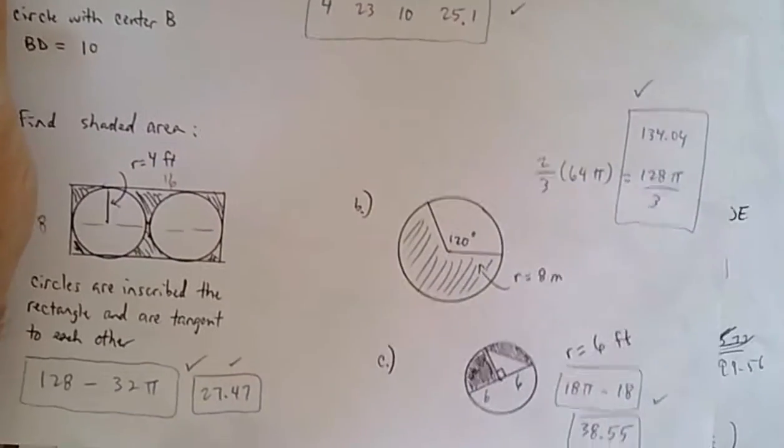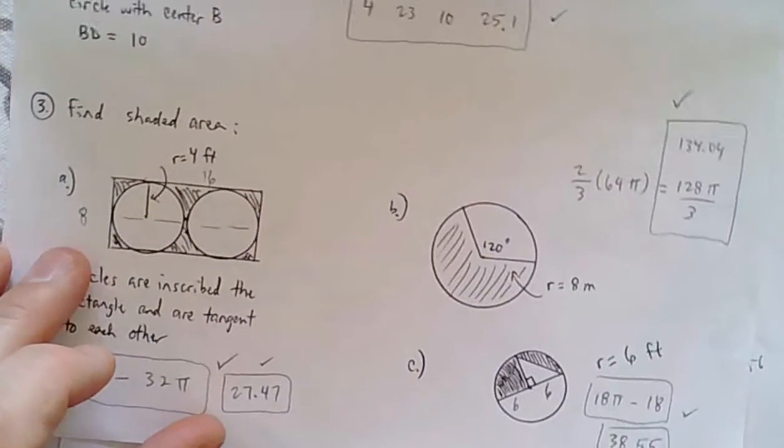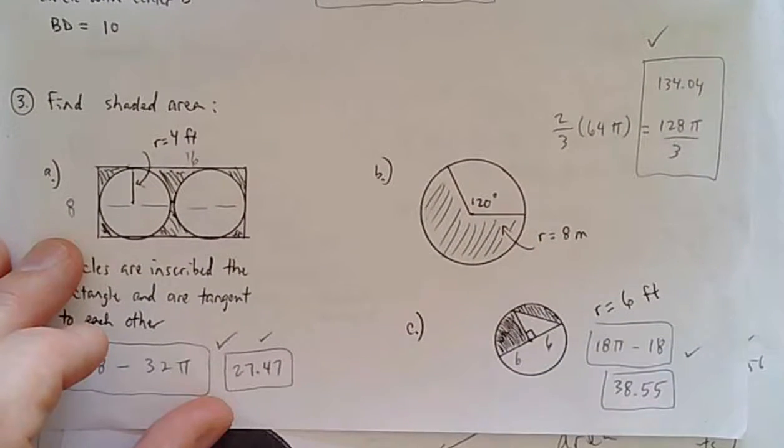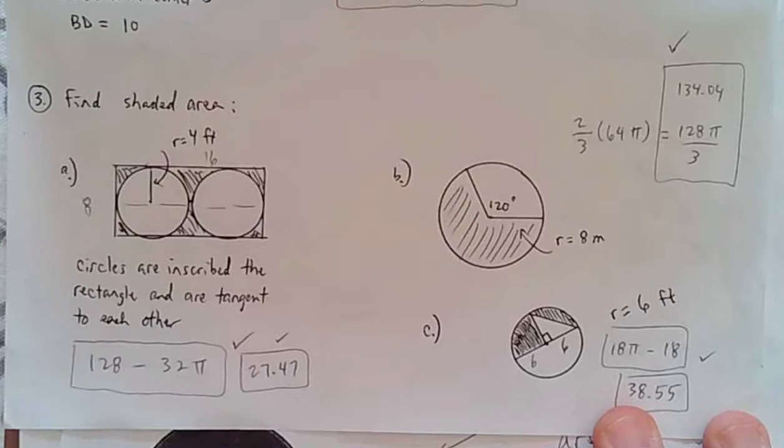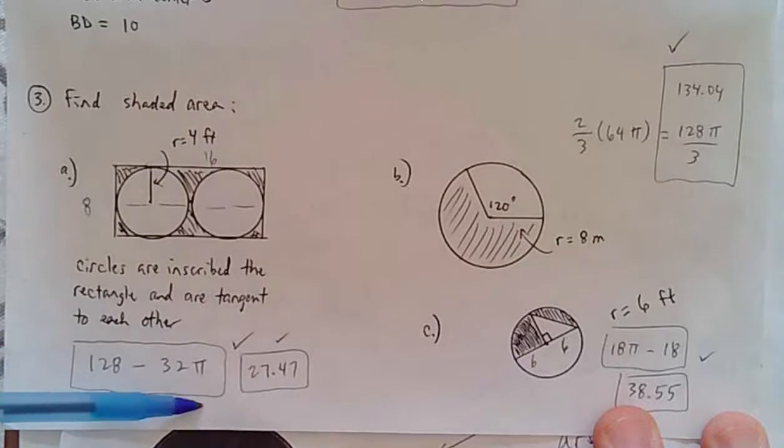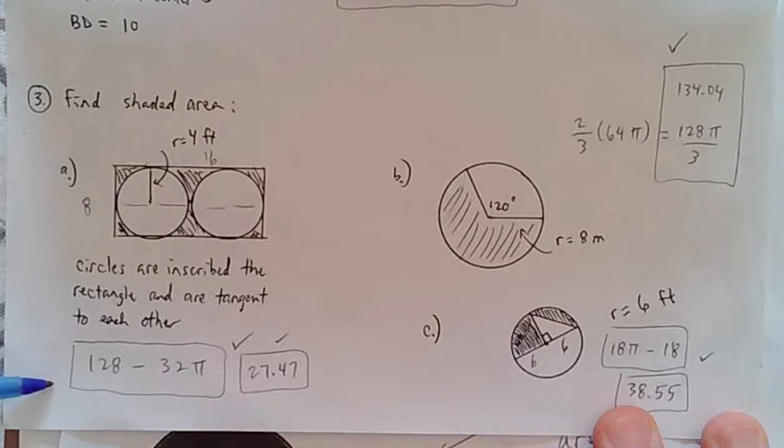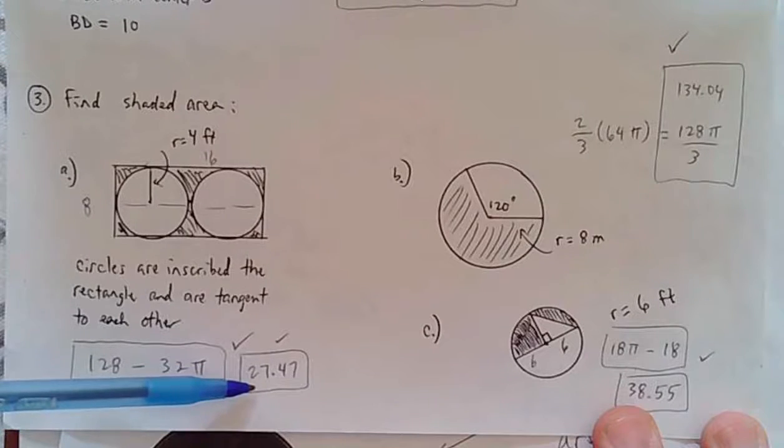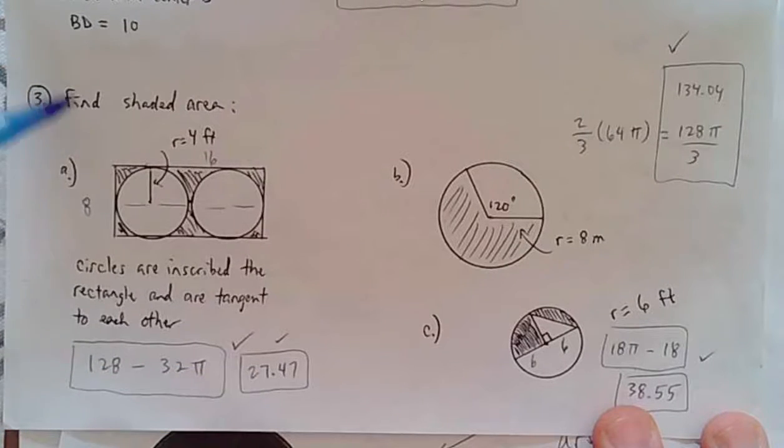Number three, again I don't think that was too bad. I'm looking here. I like the first answer, 128 minus 32π. I think you're just going to get used to writing these answers more as you get older. That's the decimal equivalent. Again, we're assuming square units for all answers.